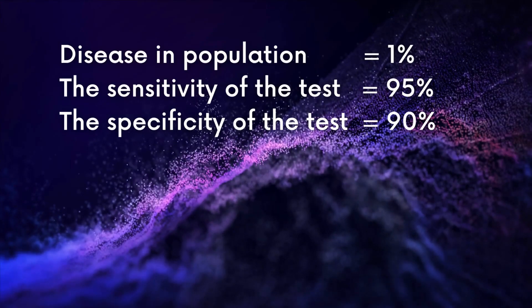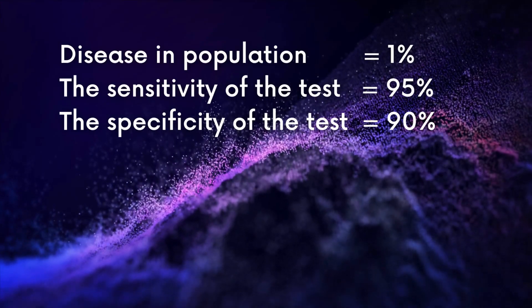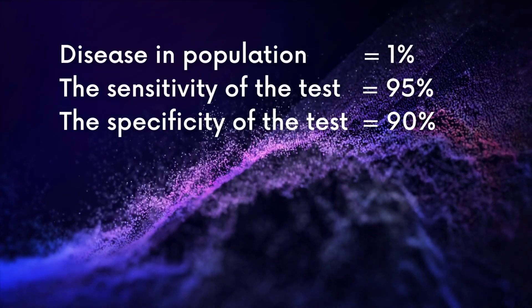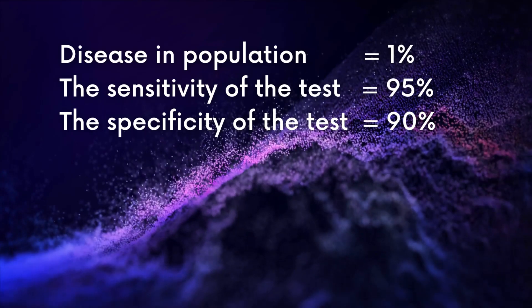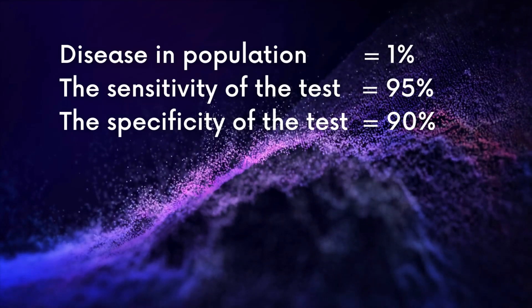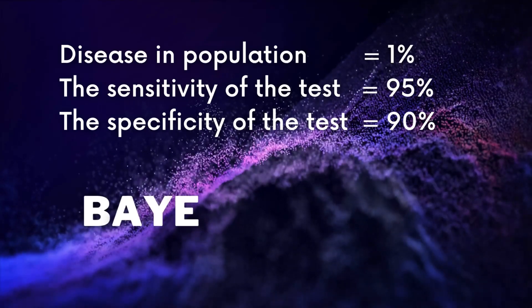First, we will gather some information. The first is the prevalence of the disease in the population, let's say it is 1%. The sensitivity of the test, let's say it is 95%. The specificity of the test, let's say it is 90%. So using Bayes theorem,